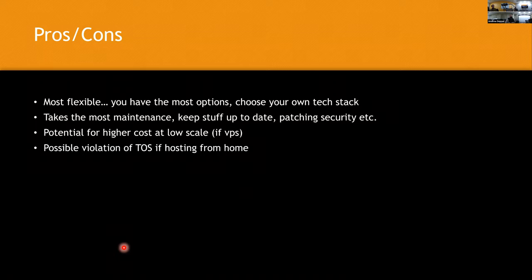There's also the potential for higher cost at low scale — you're probably going to be running somewhere between $8 to $15 a month give or take, depending on instance size. If you go to the Low End Box forum you can find cheap boxes, but at some point you do get what you pay for. Noisy neighbors are definitely a thing, and getting your IP addresses blacklisted because your neighbors are trying to sell unsavory things is an issue too. If you want to just expose your IP address and host it from home, most ISPs consider that a terms of service violation.